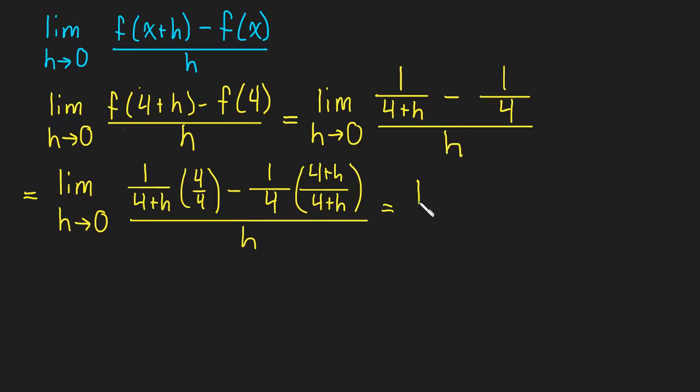And when we simplify all of that, we'll be left with 4 minus 4 plus h, all divided by 4 times 4 plus h. And then all of that is divided by h. Okay, so make sure you understand all the algebra so far, how we got to this step.